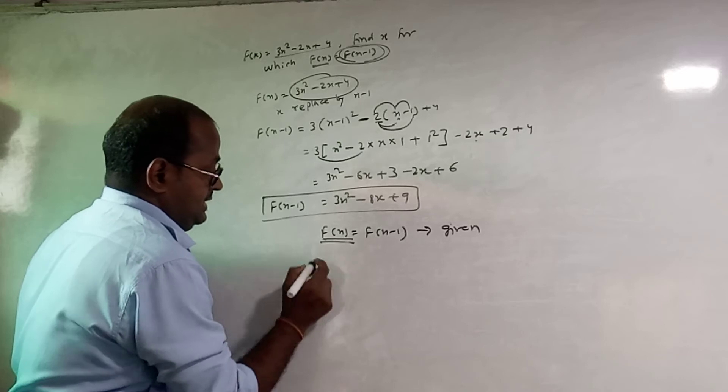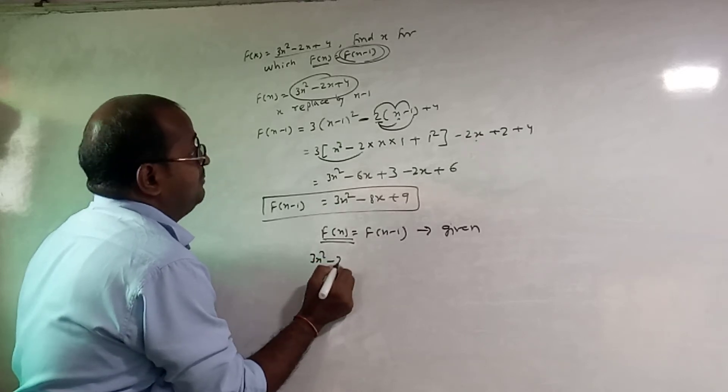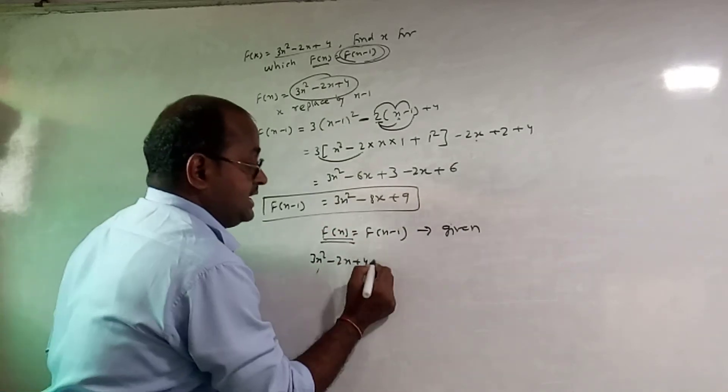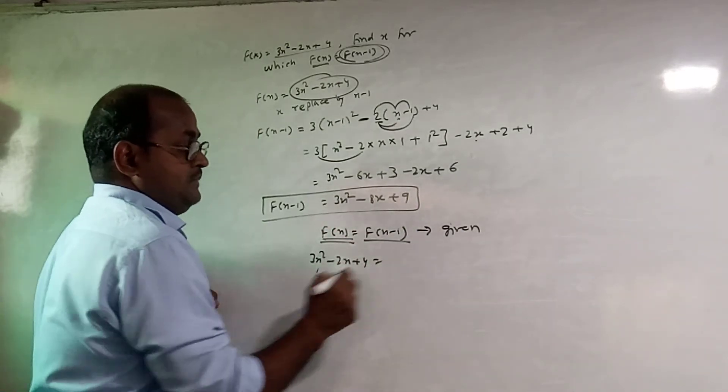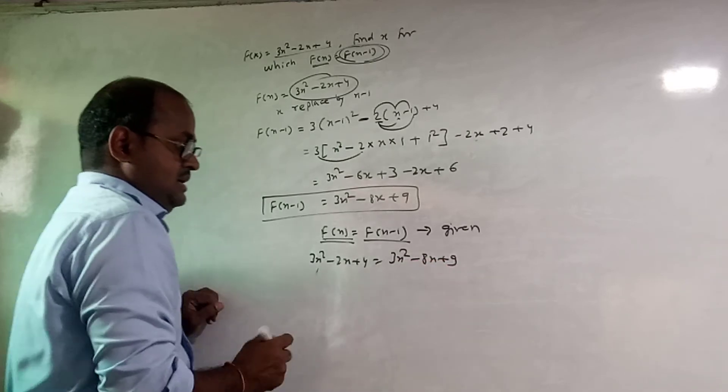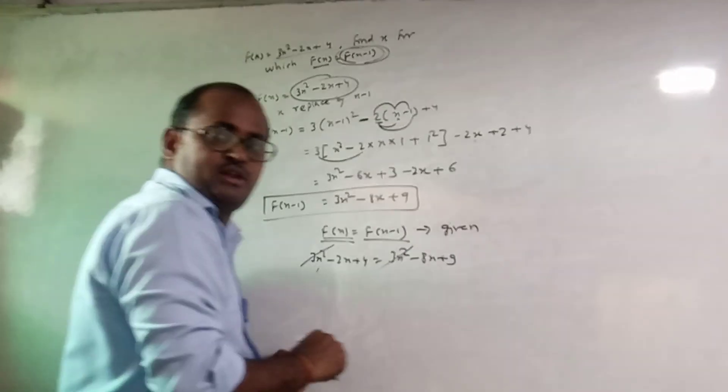3x square minus 2x plus 4. f(x). And the value is 3x square minus 8x plus 9. Now, 3x square minus 8x plus 9.